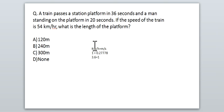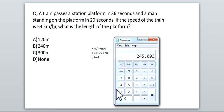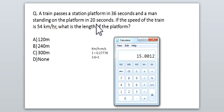Fourth question: a train passes a station platform in 36 seconds and a man standing on the platform in 20 seconds. The speed of the train is 54 km/h. What is the length of the platform? First, convert 54 km/h to m/s: 54 × 0.2778 = 15 m/s. The train crosses the man (a single point) in 20 seconds, so the length of the train = 15 × 20 = 300 meters.